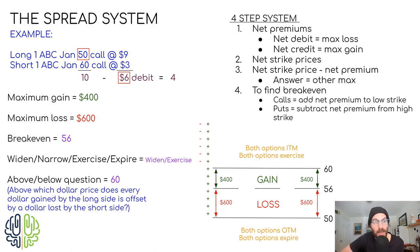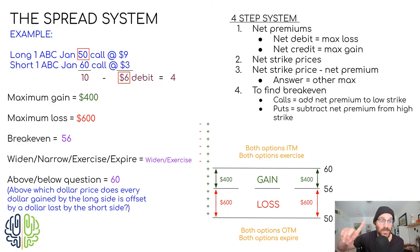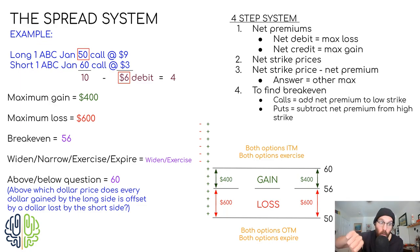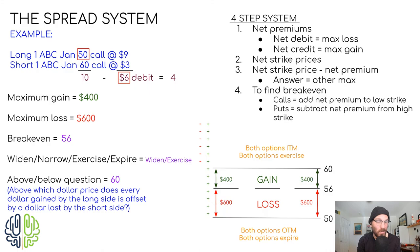If you see this question, here's a really quick two-step shortcut. Number one: the answer is always going to be one of the two strike prices — always. So right away you can eliminate two of the wrong answers. Second step: if the question is 'above which price,' it's the high strike price. If the question is 'below which price,' it's the low strike price. With calls and call spreads, the question is always going to be 'above.' With put spreads, it would be 'below.' We'll talk about put spreads in another video.